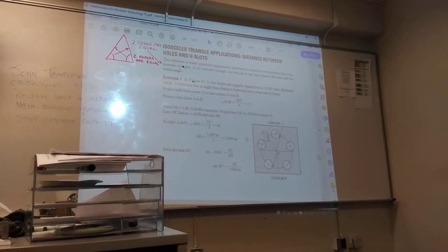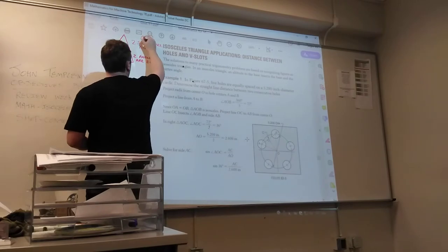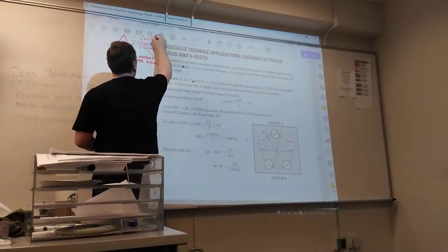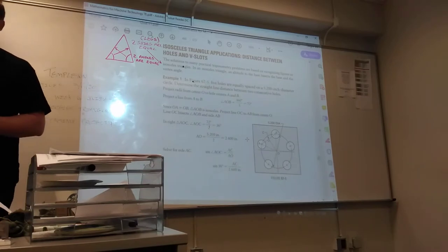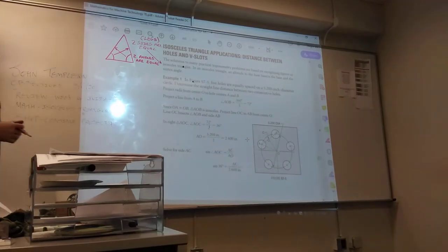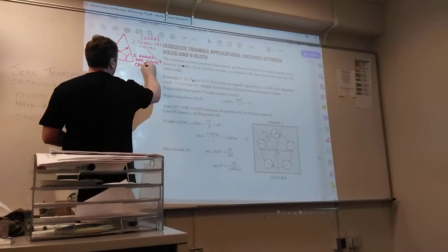So the isosceles triangle has two sides that are equal and two angles that are equal. The two sides that are equal are what's called legs. The two angles that are equal are what's called the base angles.